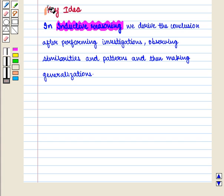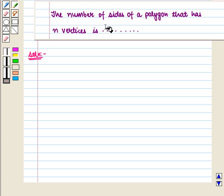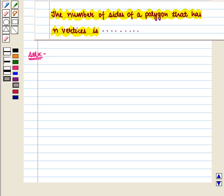With this key idea we shall move on to the solution. In this question we have to complete the conjecture, that is, the number of sides of a polygon that has n vertices is...